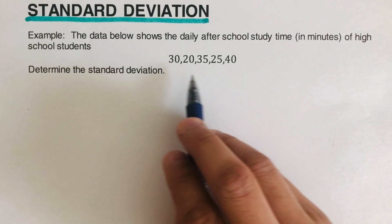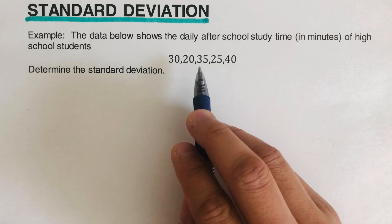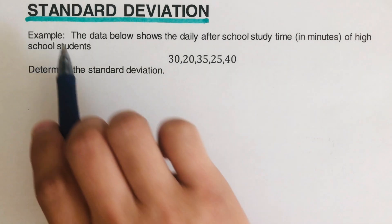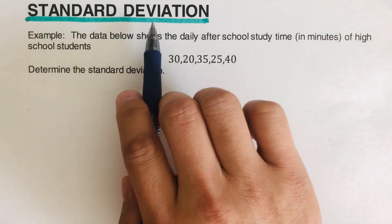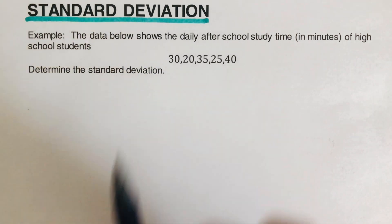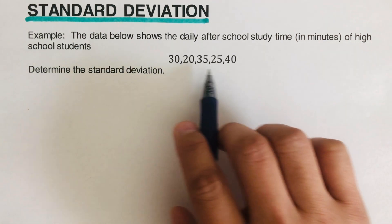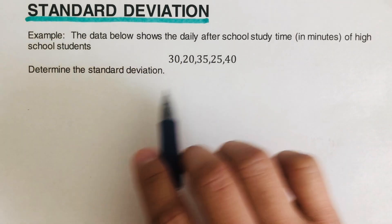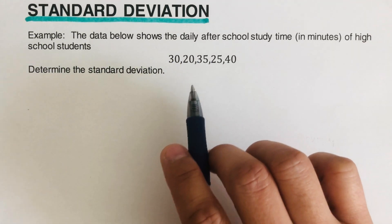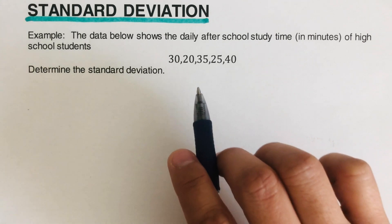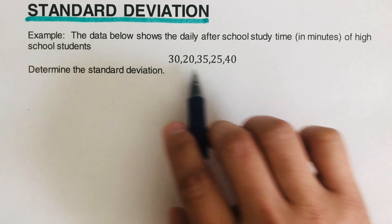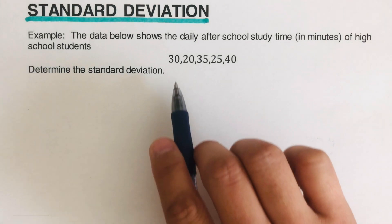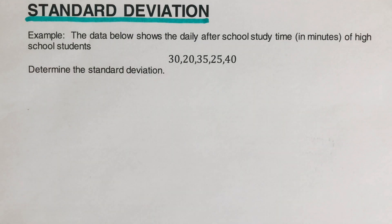Basically, are these numbers close to the mean or far from the mean? If the standard deviation value is high, it means that these values are far from the mean. If the standard deviation value is low or small, it means that these values are close to the mean. Let's get started with this example to see how we solve for standard deviation.